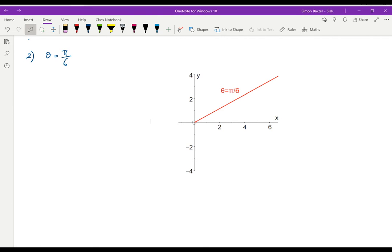And there we are. Half line making an angle of pi by 6 with the initial line or with the x-axis whichever way you think of it.